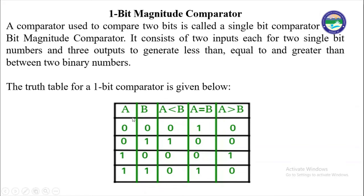For the second case when A is 0 and B equals 1, B is greater than A, so A less than B is 1 and other outputs will be 0. For the third case when A is 1 and B is 0, A is greater than B, so that output is 1 and other cases will be 0. For the fourth case when A is 1 and B is 1, both are equal, so A equal to B output will be 1 and A less than B and A greater than B will be 0.